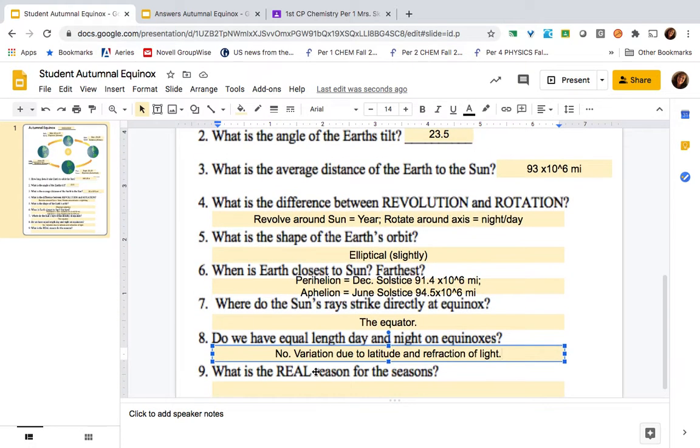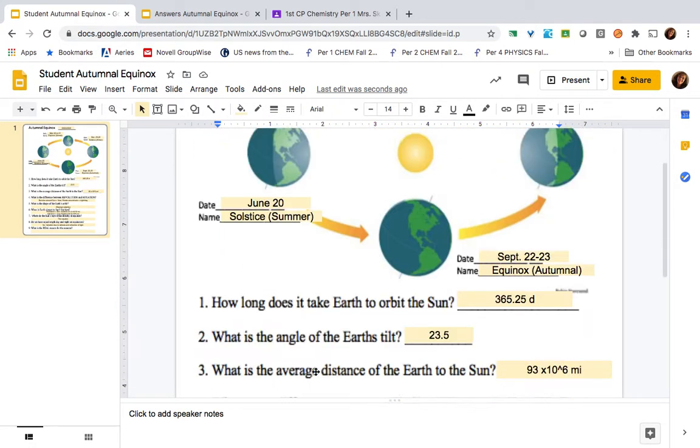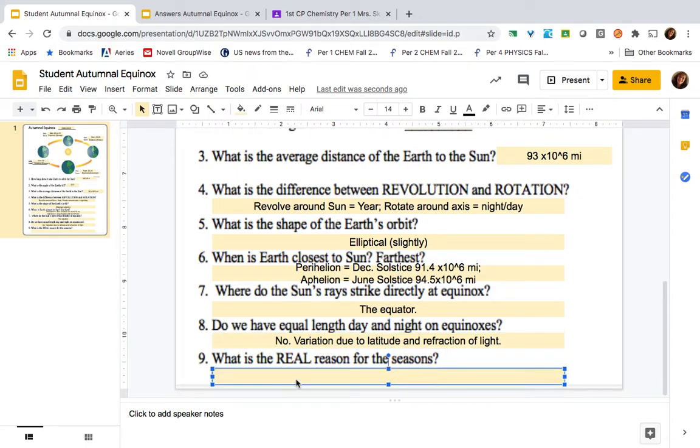So, the real reason for seasons on planet Earth has nothing to do with distance from the Sun. And it's all about the tilt of the Earth's axis. And the Earth's axis is tilted. So, when we're tilted away from direct sunlight, we have more diffuse light. And it cools off.